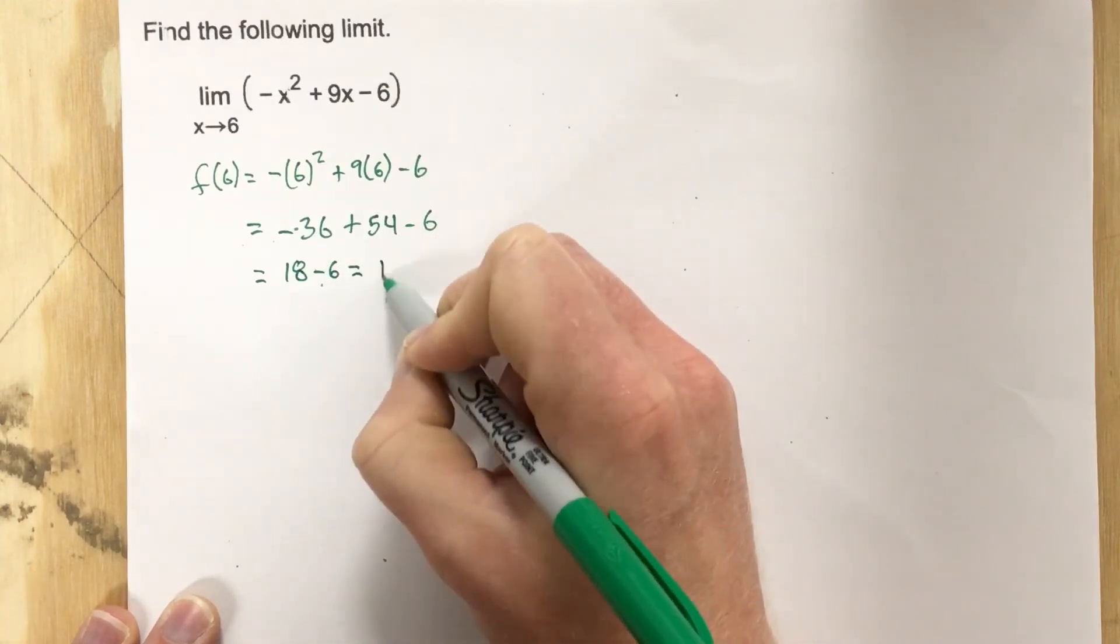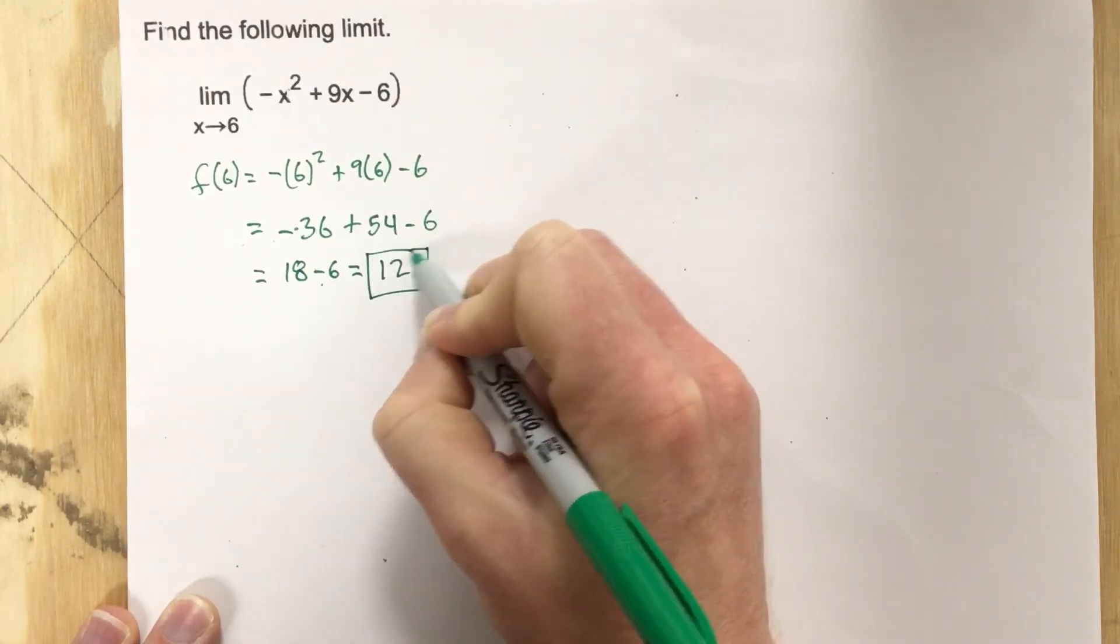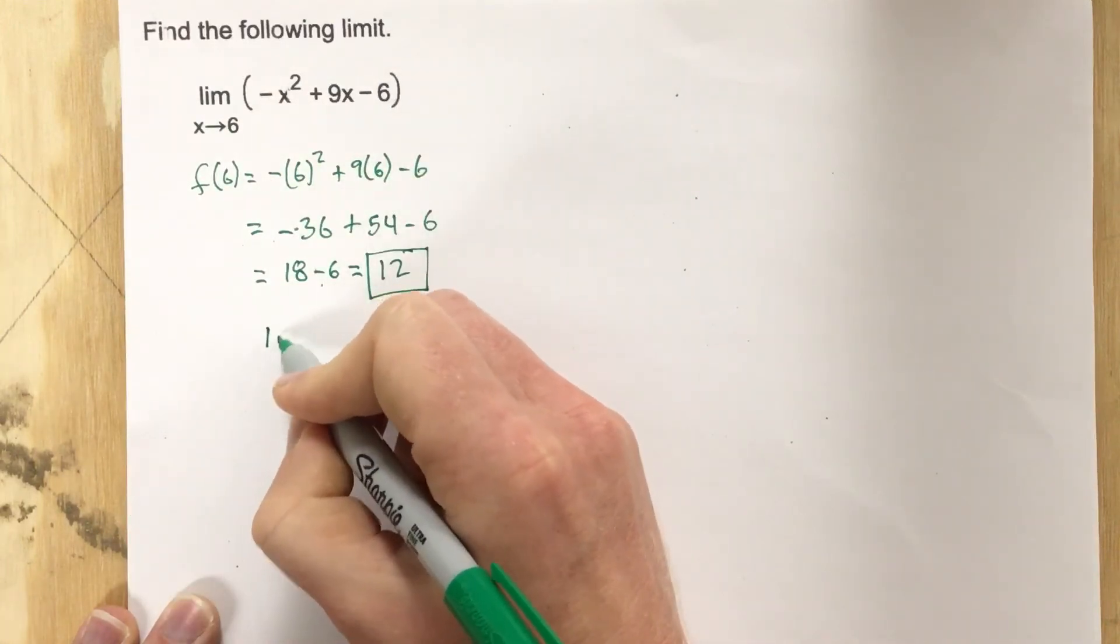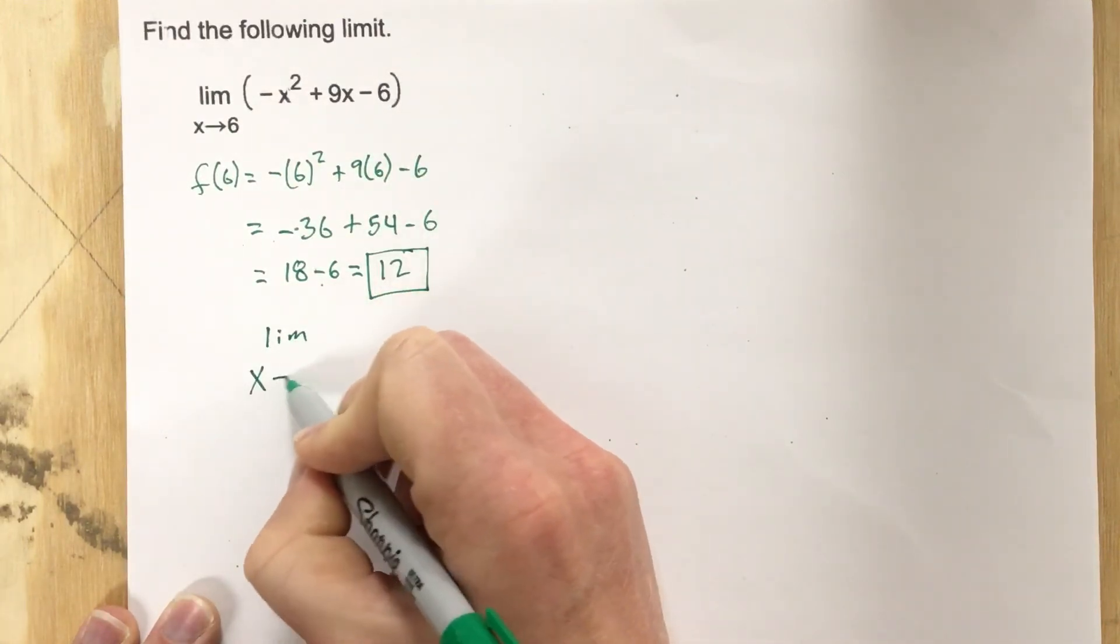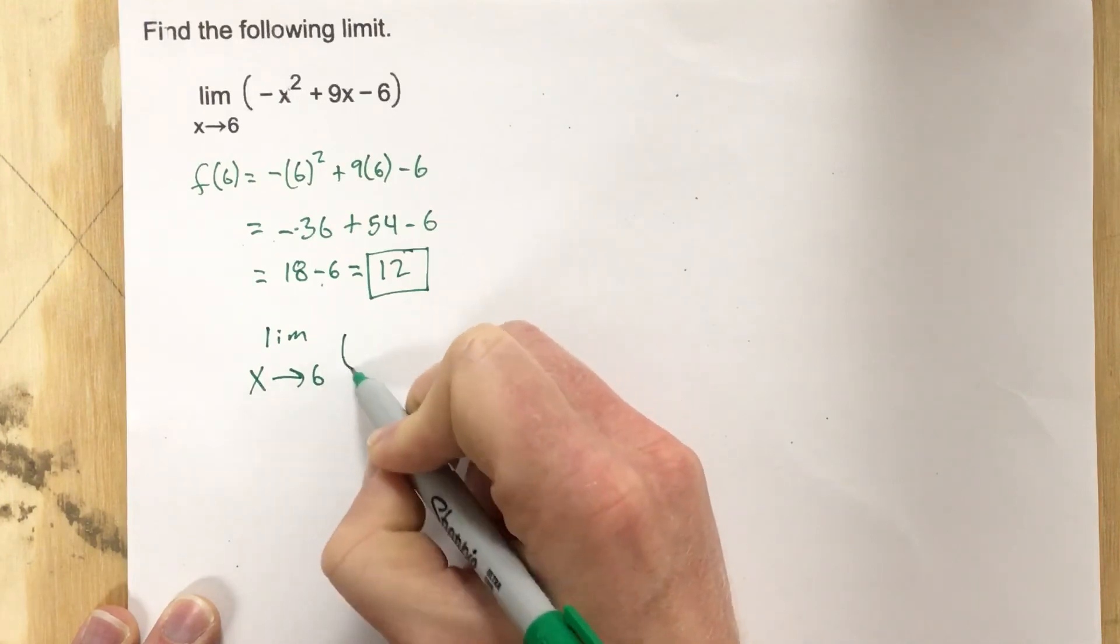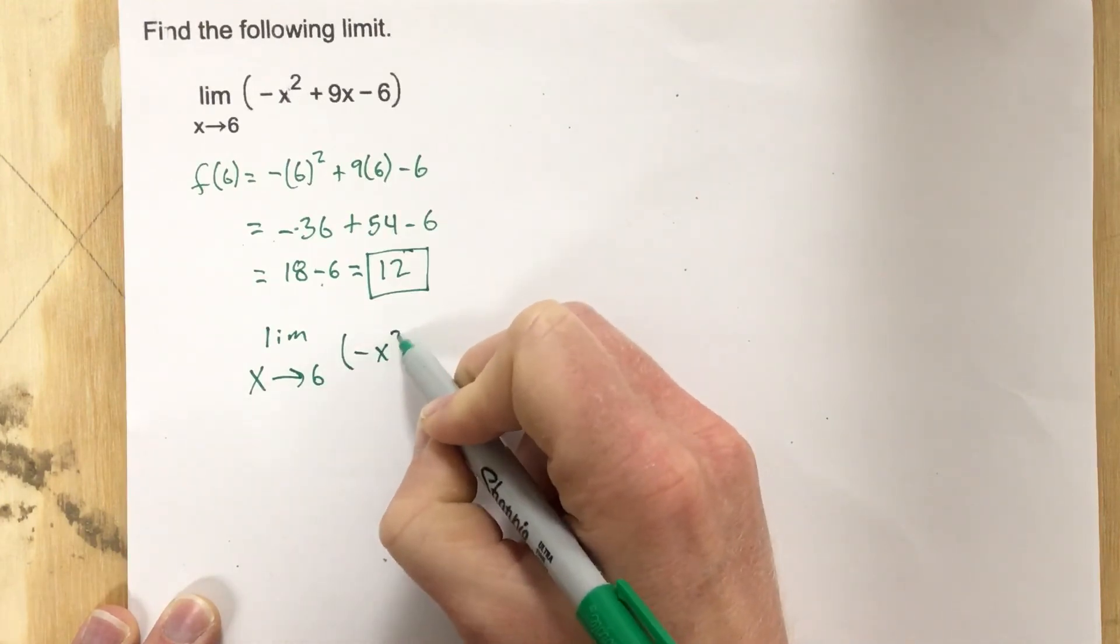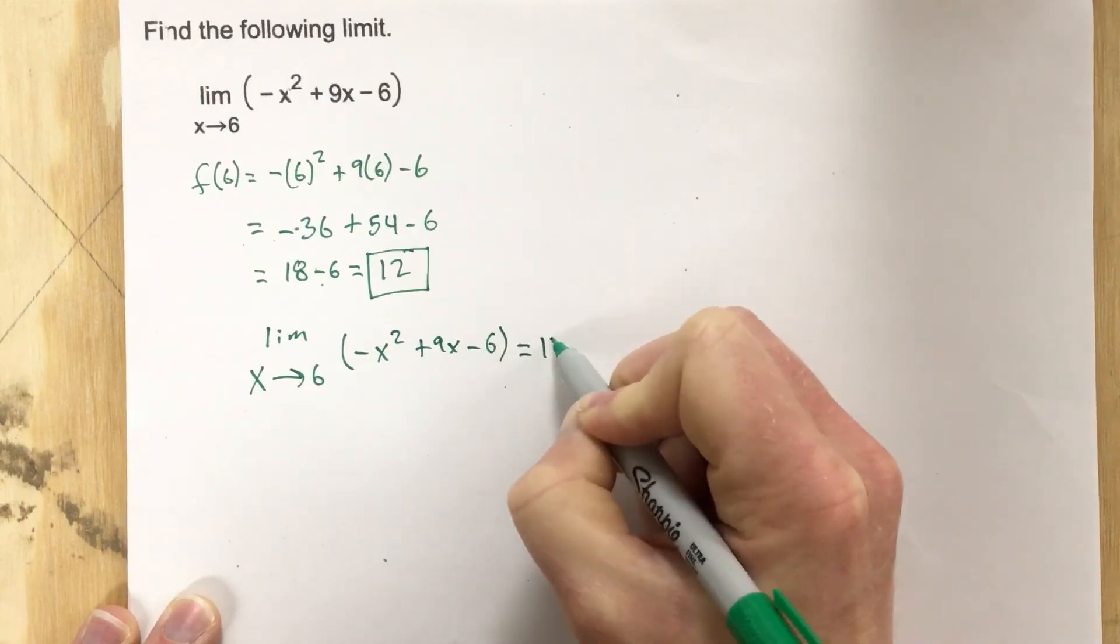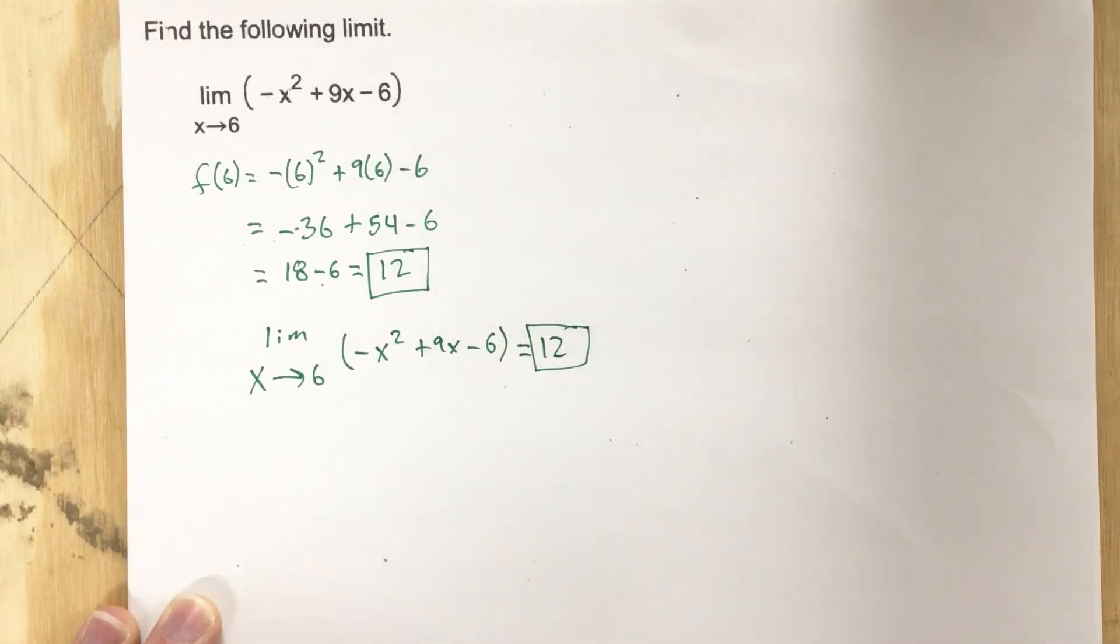which is 12. So the limit as x approaches six, we could say the limit as x approaches six of this function, negative x squared plus nine x minus six equals 12. And that's the solution.